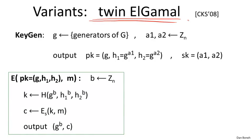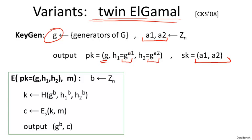Twin Elgamal is a very simple variation of Elgamal. In key generation, we choose a random generator, but this time we're going to choose two exponents A1 and A2 as the secret key. The public key consists of the generator, G to the A1, and G to the A2. So remember that in regular Elgamal the public key is simply G to the A; here we release both G to the A1 and G to the A2. The public key is therefore one element longer than regular Elgamal.